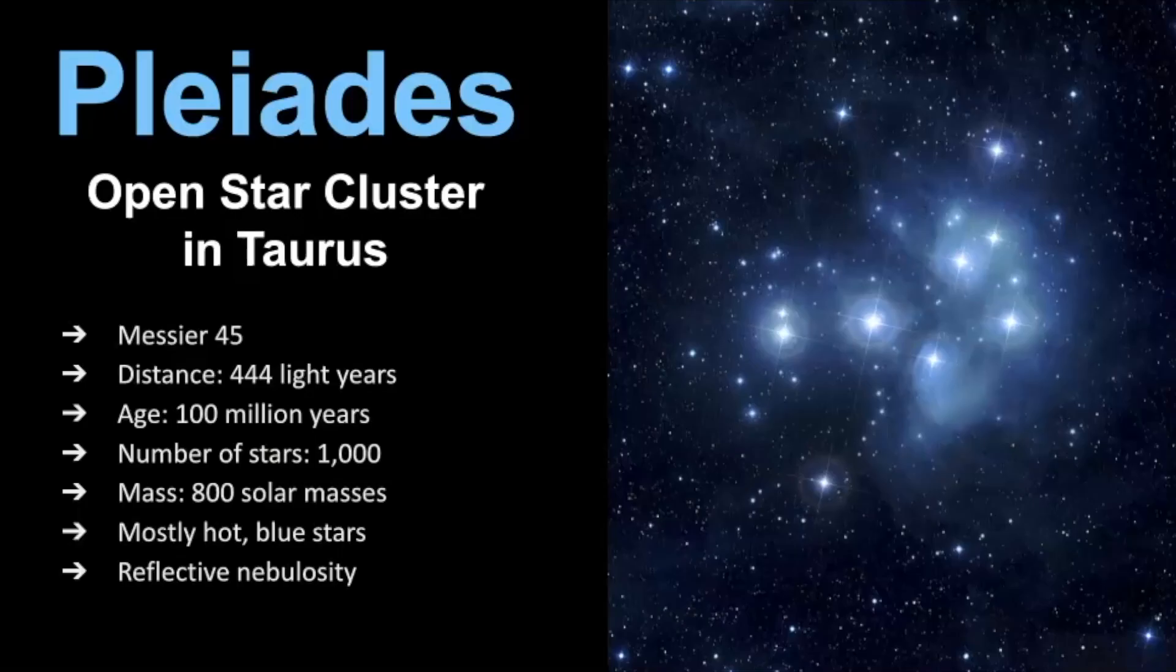So first the Pleiades is an open star cluster. It is located in Taurus and it has a few different names, especially this varies from culture to culture, but to astronomers it's known as Messier 45 and its distance is about 444 light years away, give or take a few light years there.